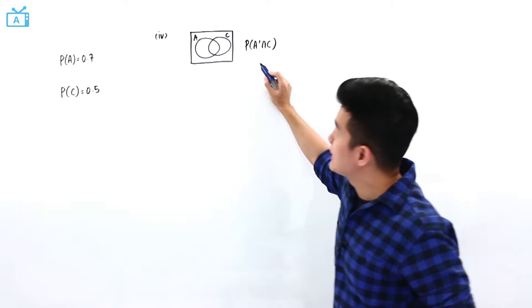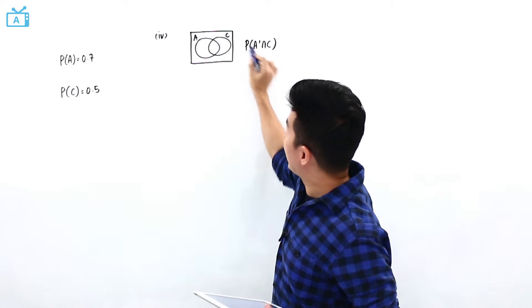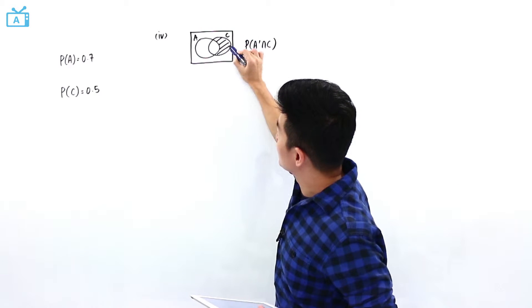Probability of A' intersect C is anywhere that is outside A and inside C at the same time. So it is this region over here.